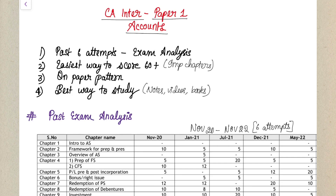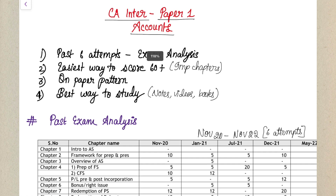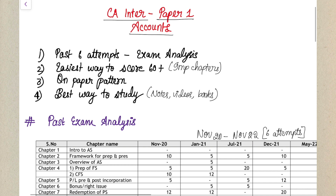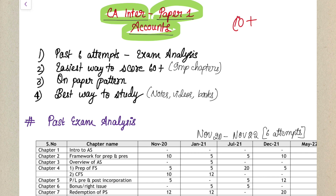Hello guys, welcome to Bhamna's Online Academy. As you would have read in the title, the most awaited video is here. In this video we are going to discuss CA Intermediate Paper 1 Accounts strategy — how you have to prepare for your accounts so you are easily able to score 60 plus in the examination.